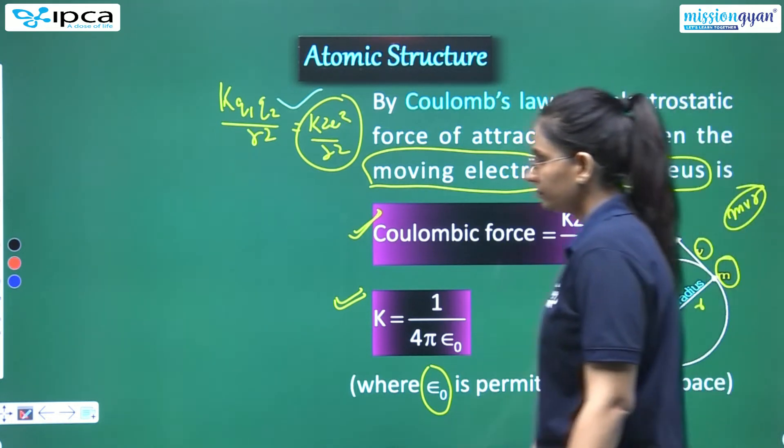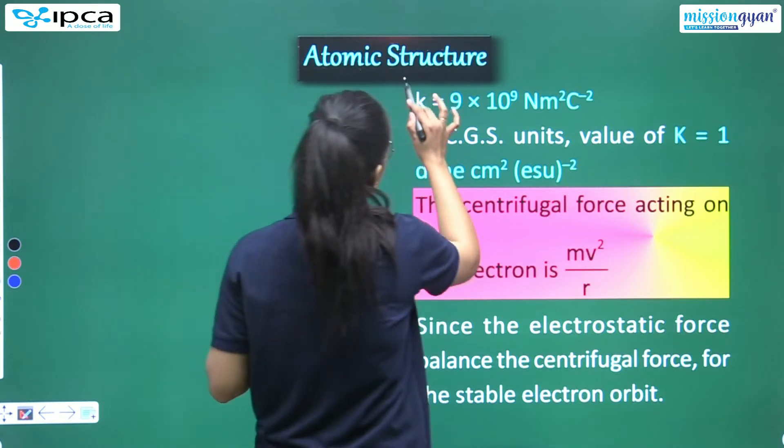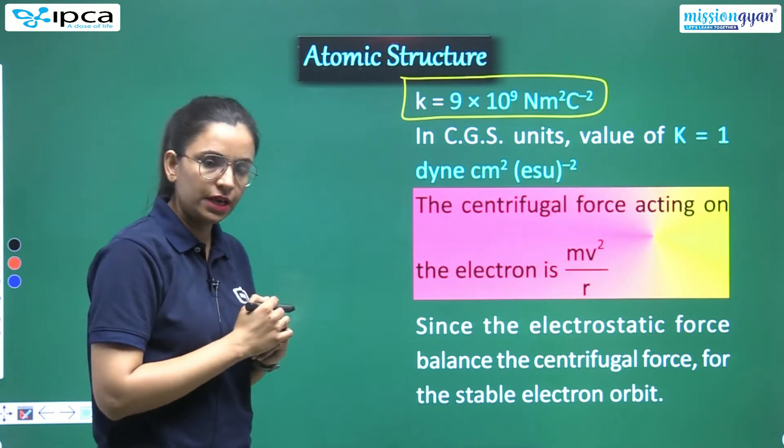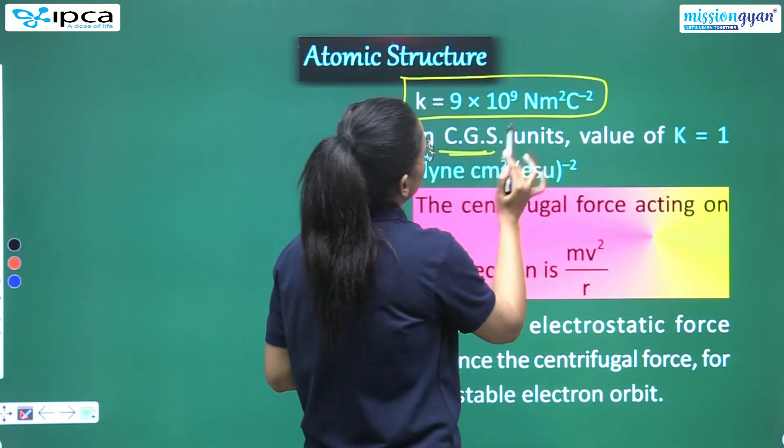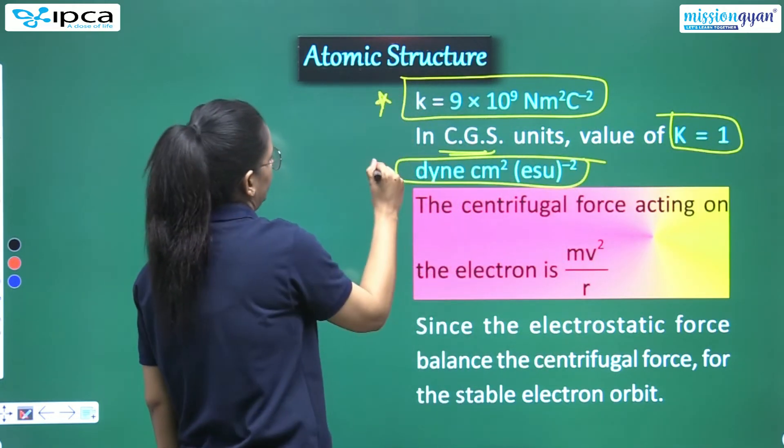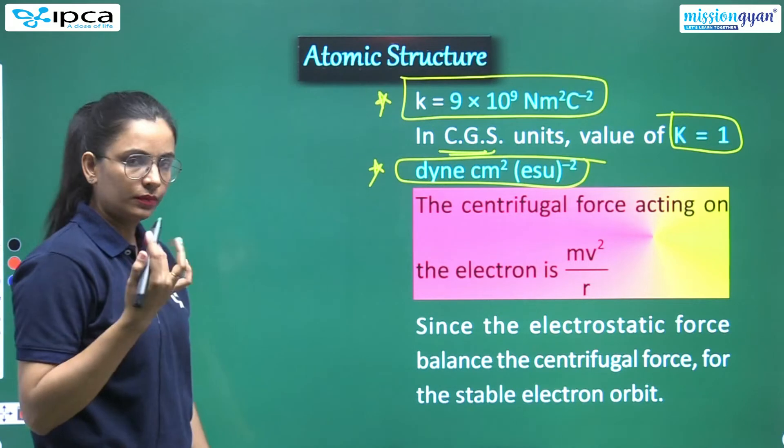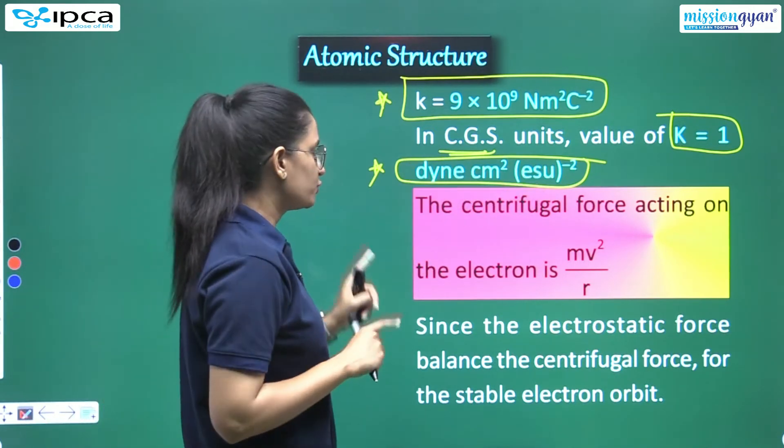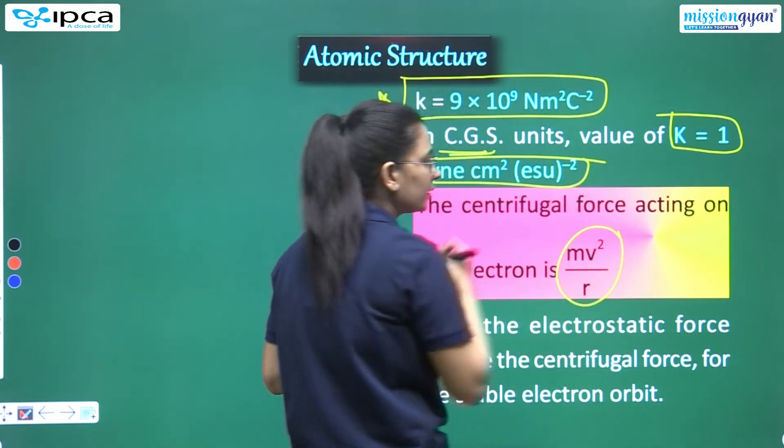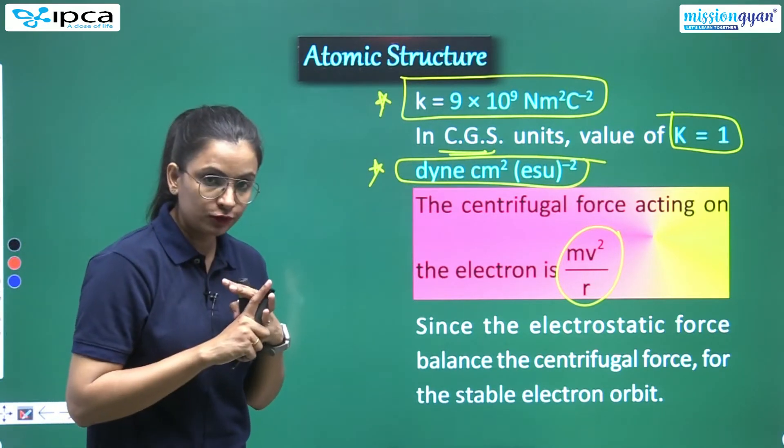And I told you that R is radius, tangential velocity, this is your tangent that you are drawing from here, and this is your mass. Now you know the value of K - what will the constant value be? 9 into 10 raise to power 9 newton meter square coulomb inverse. Now in CGS, if units are asked, K's value is 9 cm square. Both are important - remember. What will it be? 1.9 cm square esu minus 2, electrostatic unit we call it.